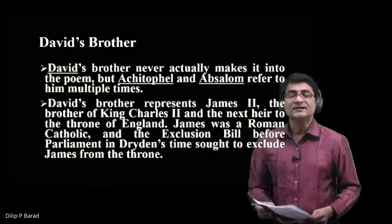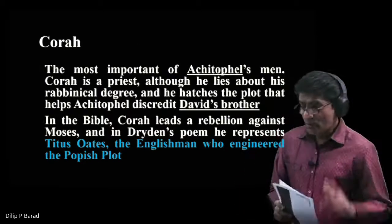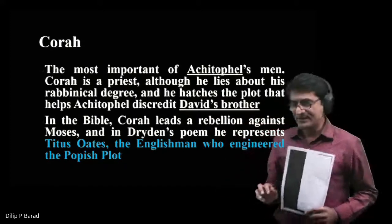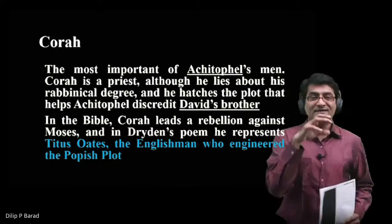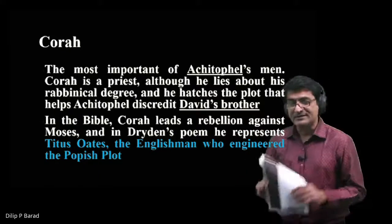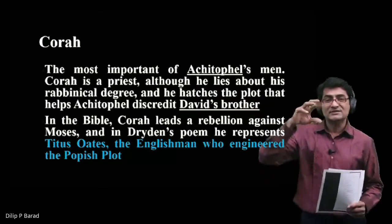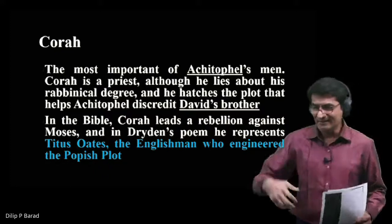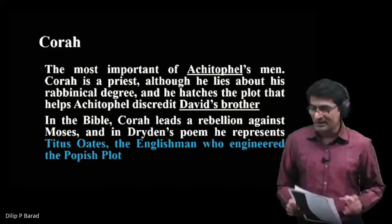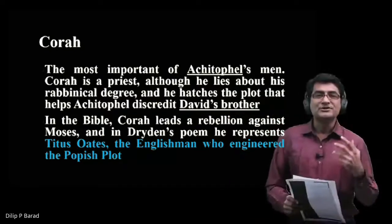Dryden implies that David's brother has a divine right to the throne bestowed by God, and likewise implies that James the Second has the right to rule over England. The next minor character is Kora — the most important of Achitophel's men. Kora is a priest who lies about his rabbinical degree and hatches the plot that helps Achitophel discredit David's brother. In the Bible, Kora leads a rebellion against Moses.